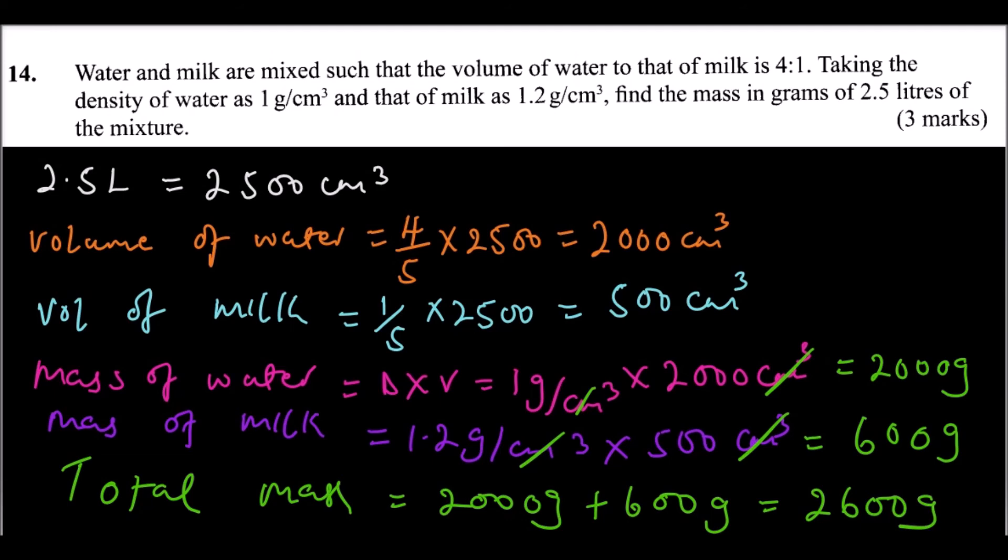Remember, you are taught how to get density in form 2. Density is equals to mass over volume. So, you can interchange. For example, if you have density equals mass over volume, it means mass equals volume multiplied by density, and we can say volume equals mass over density. So, you can interchange that formula to suit what you are looking for.